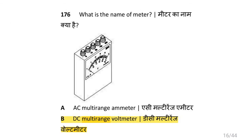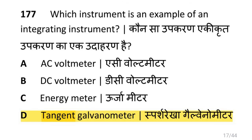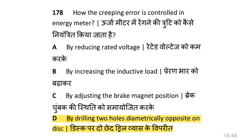What is the name of the meter shown? That is DC multi-range voltmeter. Which instrument is an example of an integrating instrument? That is tangent galvanometer. How is the creeping error controlled in an energy meter? That is by drilling two holes diametrically opposite on the disc.